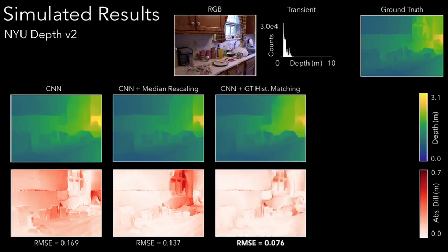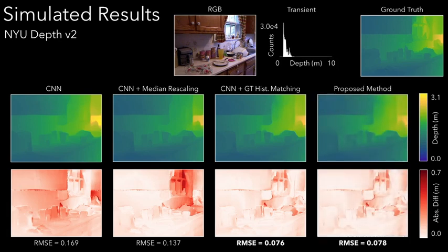Matching the output of the CNN to the ground truth depth histogram correctly adjusts both countertop and window, but requires access to ground truth depth. Finally, our method achieves comparable results to ground truth histogram matching and reduces the RMSE by over 50% compared to the CNN alone.